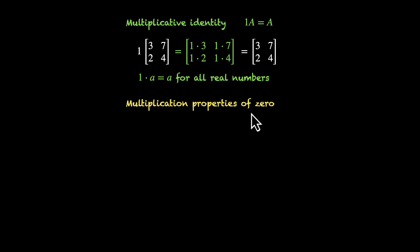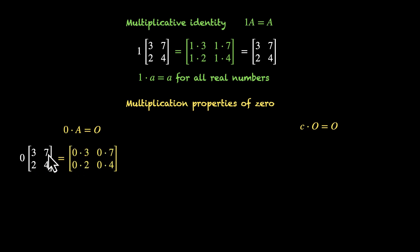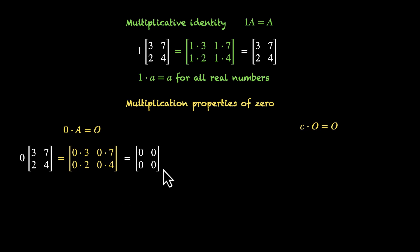Then we have multiplication properties of zero. Let's pick the first one: zero times a matrix equals the zero matrix. Zero times any matrix, say [3, 7, 2, 4], means multiplying zero with all of these elements: zero times 3, zero times 7, zero times 2, zero times 4. So you're not getting just zero — you're getting a 2 by 2 matrix with all elements equal to zero. Because all of them multiplied by zero gives zero, we get a 2 by 2 matrix with all elements zero. This is the zero matrix, not just zero. This works because zero times any real number is equal to zero.